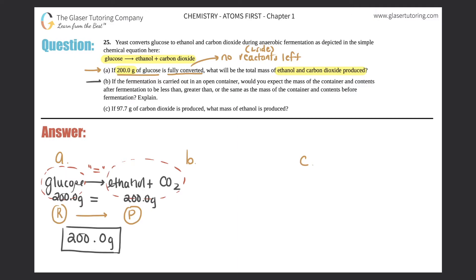Letter B: If fermentation is carried out in an open container, would you expect the mass of the container and contents after fermentation to be less than, greater than, or the same as the mass of the container and contents before fermentation and explain? So here we go, we got a beaker and it's open, it's not closed.